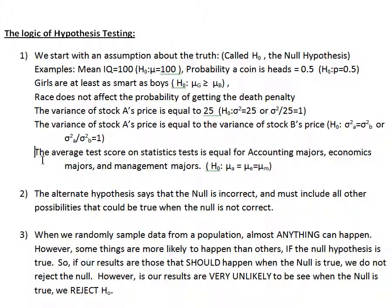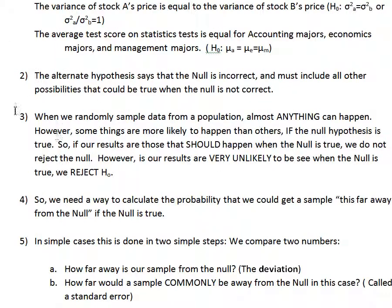We could test that the average test score on statistics tests is equal for accounting majors, economics majors, and management majors — writing this as mu for accountants equals mu for economists equals mu for management. So we first identify the hypothesis we're starting with and trying to test. Then second, we write down an alternate hypothesis. The alternate hypothesis says that the null is not right — it includes all other possibilities that could be true when the null is not correct.